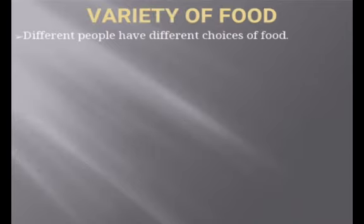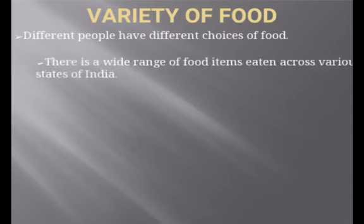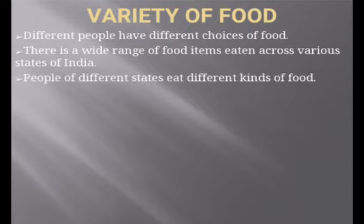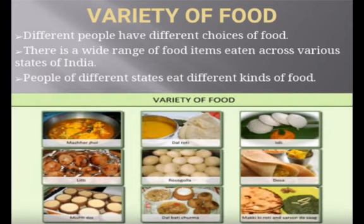What do we mean by variety? That means different types of items, different types of choices. Different people have different choices of food. There is a wide range of food items eaten across various states of India. People of different states — and different countries — eat different kinds of food.